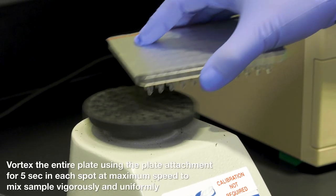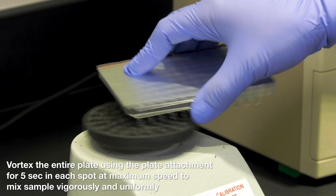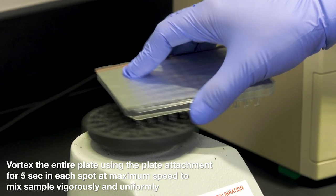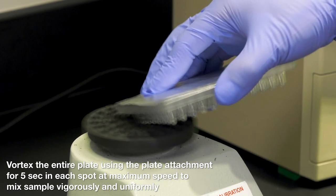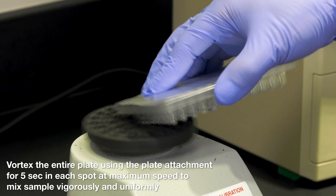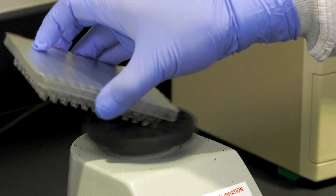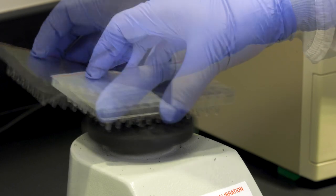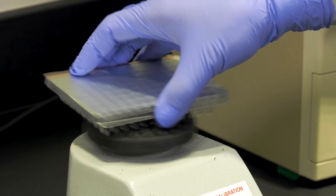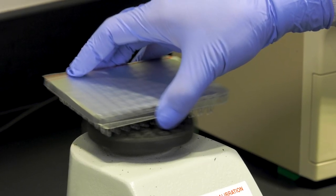Alternatively, some vortexers may have a plate attachment. You can vortex the entire plate using this. Again, you want to vortex the corners and middle of the plate for 5 seconds at each spot at maximum speed. The DD-PCR super mixes are very viscous, so you want to make sure to mix the plate really well.